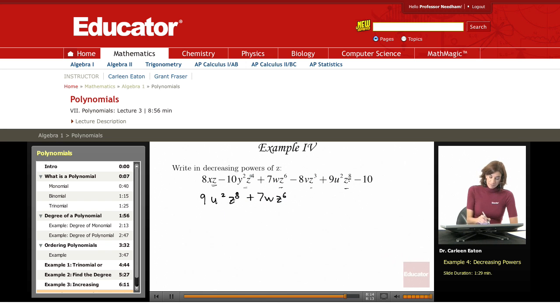After that, z to the 4th, so negative 10y squared z to the 4th.